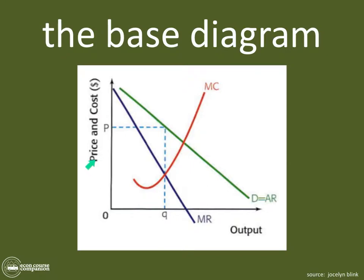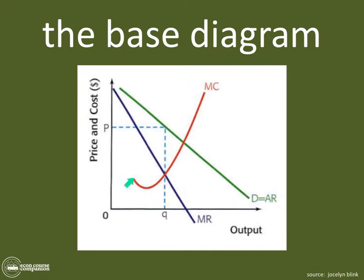Let me run through it again. You have a vertical axis of price and cost with currency, zero at the origin, and a horizontal axis for output. In monopolistic competition, firms face a downward sloping demand curve, so you draw your demand curve where D equals average revenue. You have a marginal revenue curve that descends at twice the rate of average revenue. Then you draw the marginal cost curve — the all-telling cost curve that points you in the direction of almost every critical point.